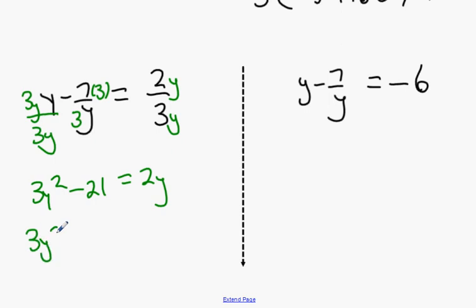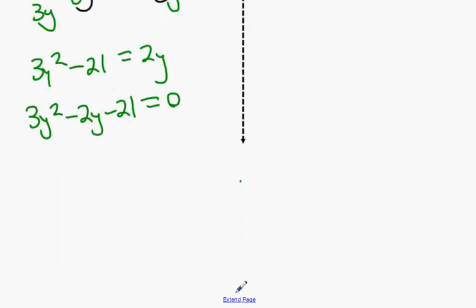Bring the 2y over the other side. We get 3y squared minus 2y minus 21 equal to 0. Once again, do the reference number. Reference number of minus 63. Break it up into minus 9 and plus 7.